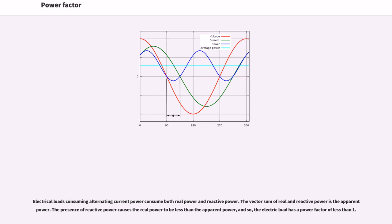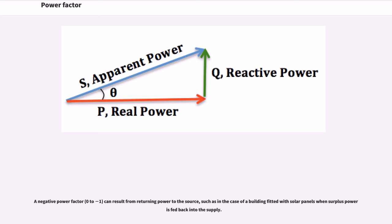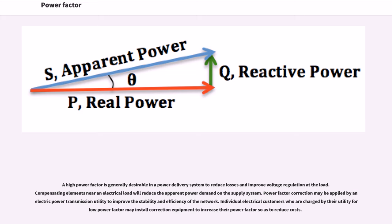Electrical loads consuming alternating current power consume both real power and reactive power. The vector sum of real and reactive power is the apparent power. The presence of reactive power causes the real power to be less than the apparent power, and so the electric load has a power factor of less than 1. A negative power factor can result from returning power to the source, such as in the case of a building fitted with solar panels when surplus power is fed back into the supply.